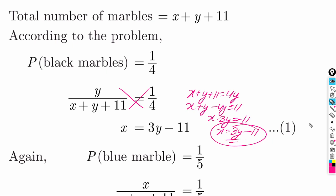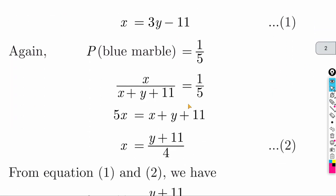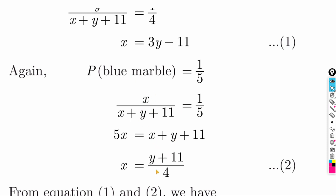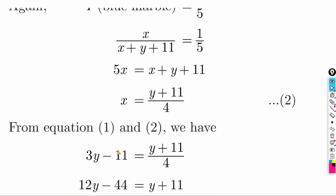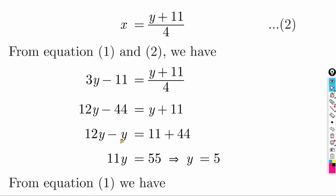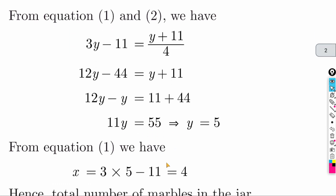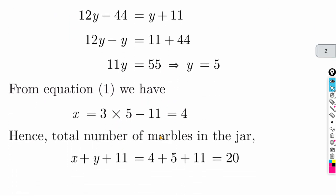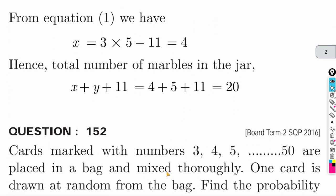For blue marbles: x divided by (x + y + 11) = 1 by 5. Substituting x = 3y - 11, we get 3y - 11 = (y + 11) by 4. Multiplying: 12y - 44 = y + 11, so 11y = 55, giving y = 5. Then x = 3(5) - 11 = 4. Total marbles = x + y + 11 = 4 + 5 + 11 = 20.